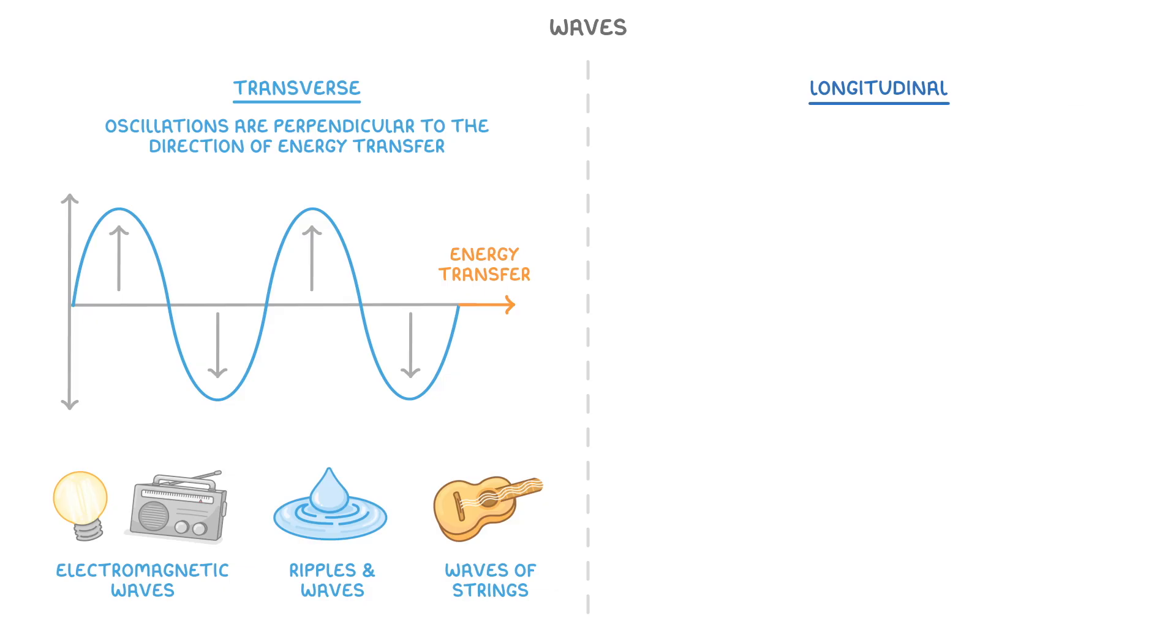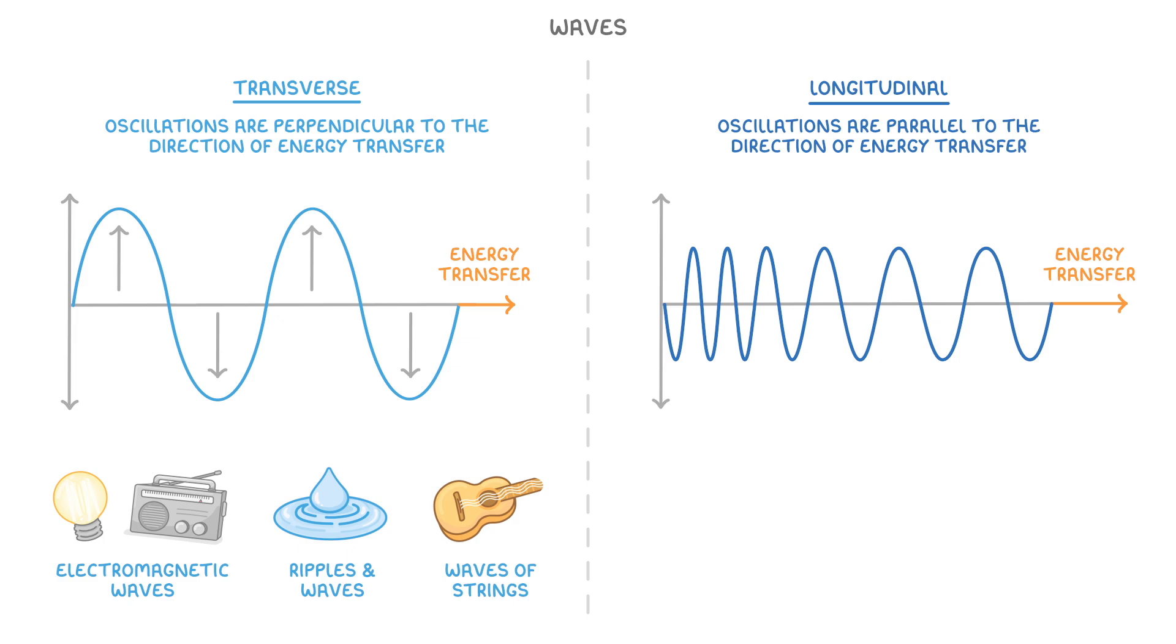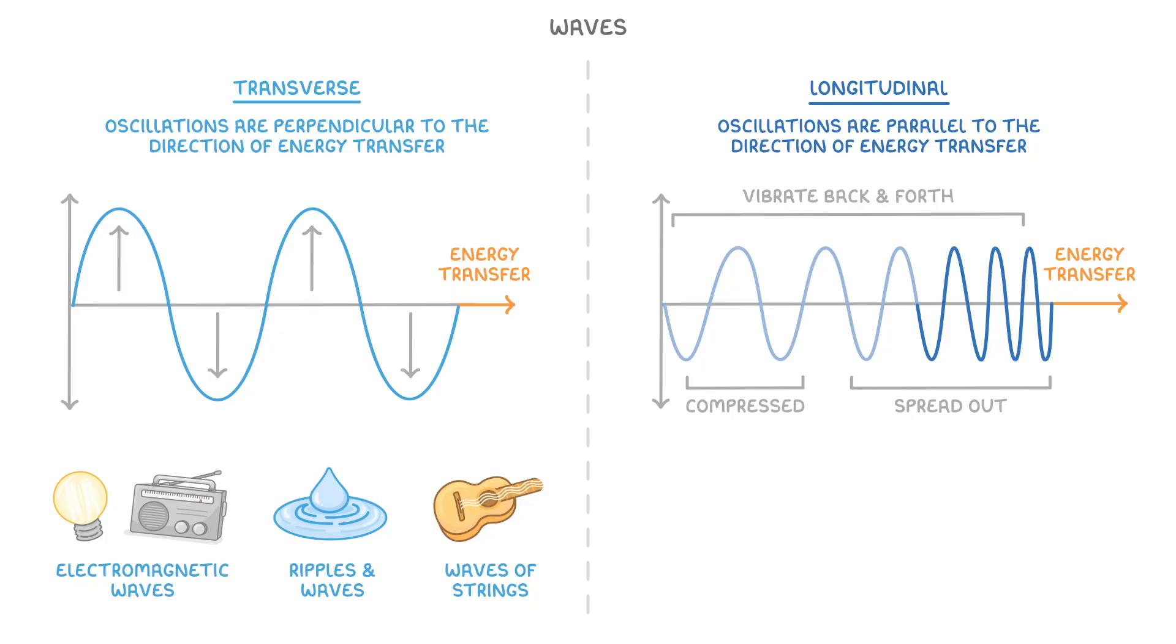Longitudinal waves on the other hand, have oscillations that are parallel to the direction of energy transfer. This one's a bit trickier to get your head around, but basically it leads to some regions that are more spread out, and other regions that are more compressed, because the waves are vibrating back and forth. In motion it would look as if this area of compression is moving from the left to the right within the wave.